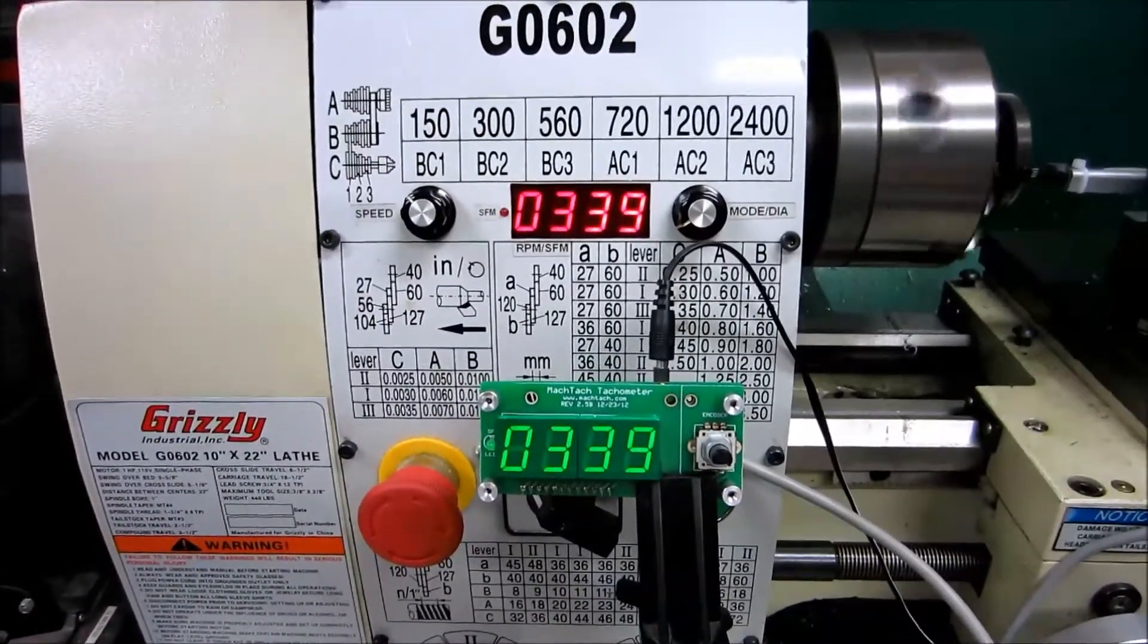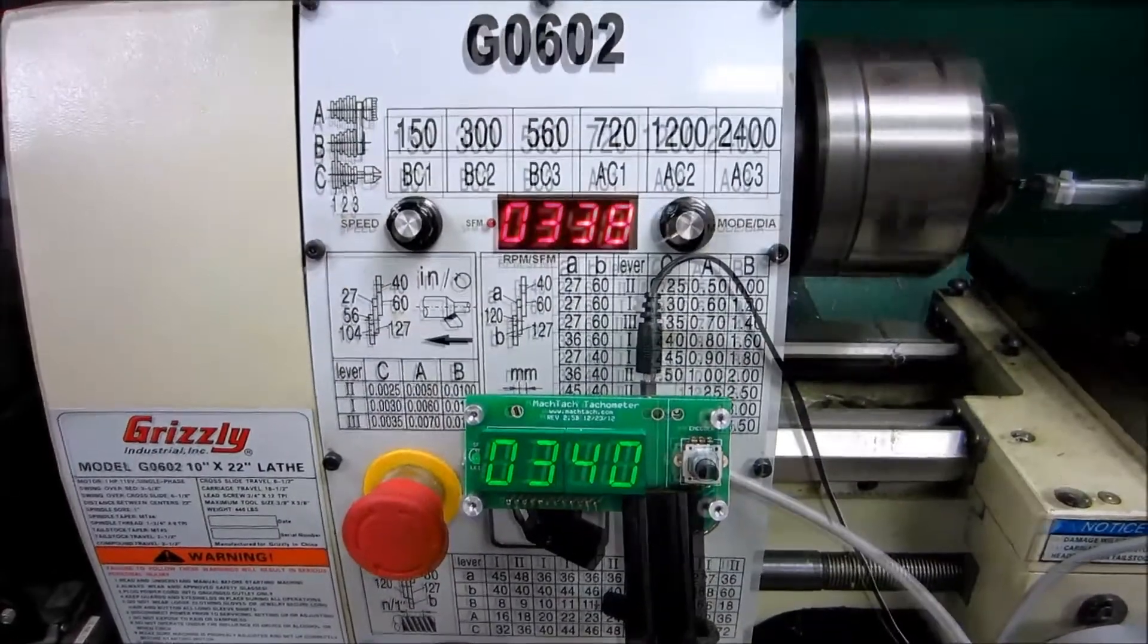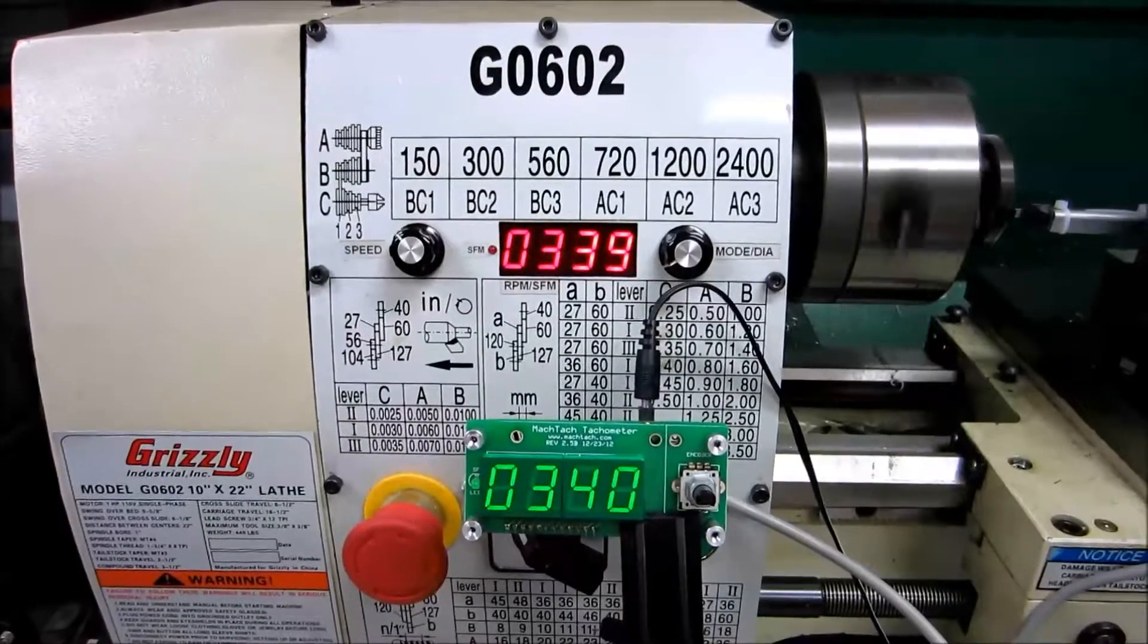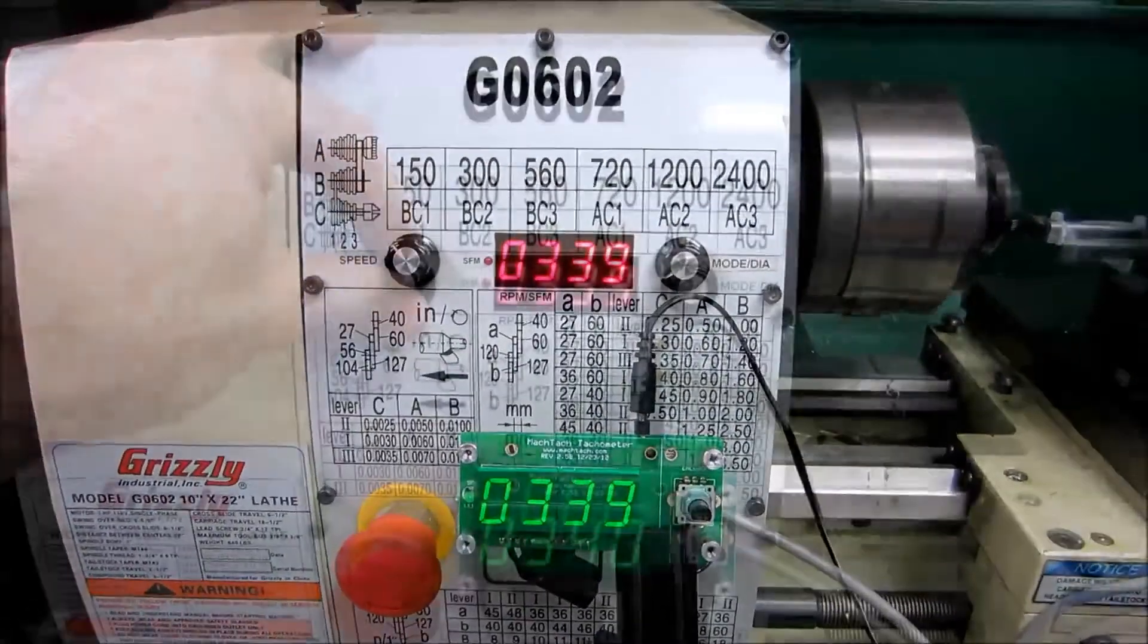So you can see it's reading about 339 RPMs. It's plus or minus 1 RPM, so you'll see it deviating a little bit there. But it's basically right around 330.